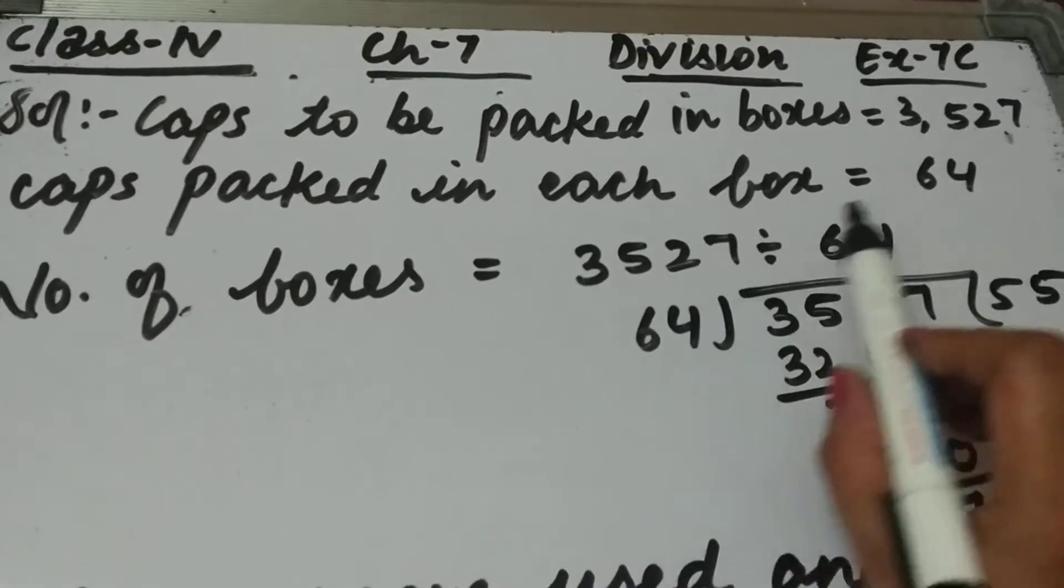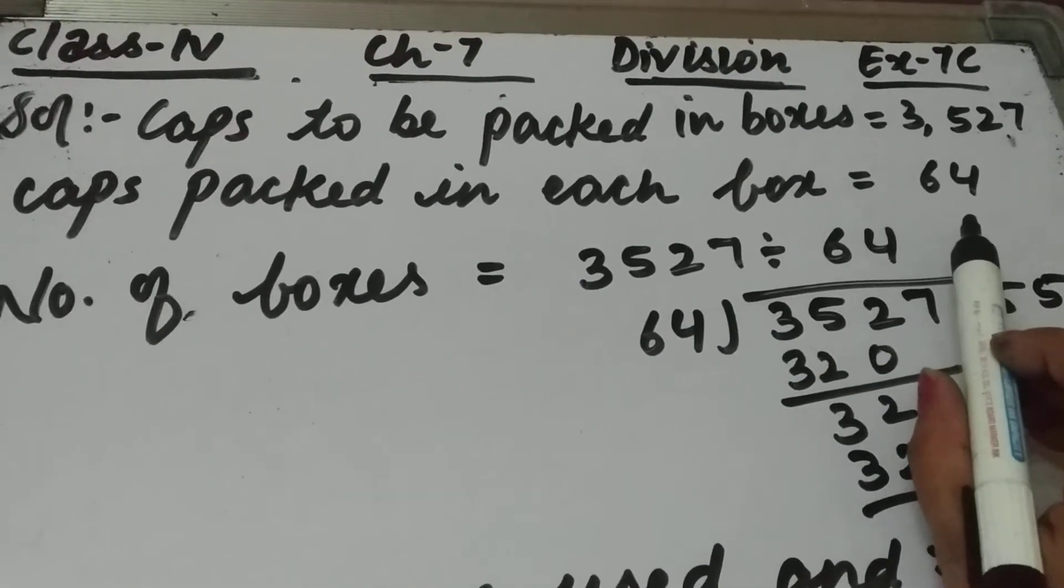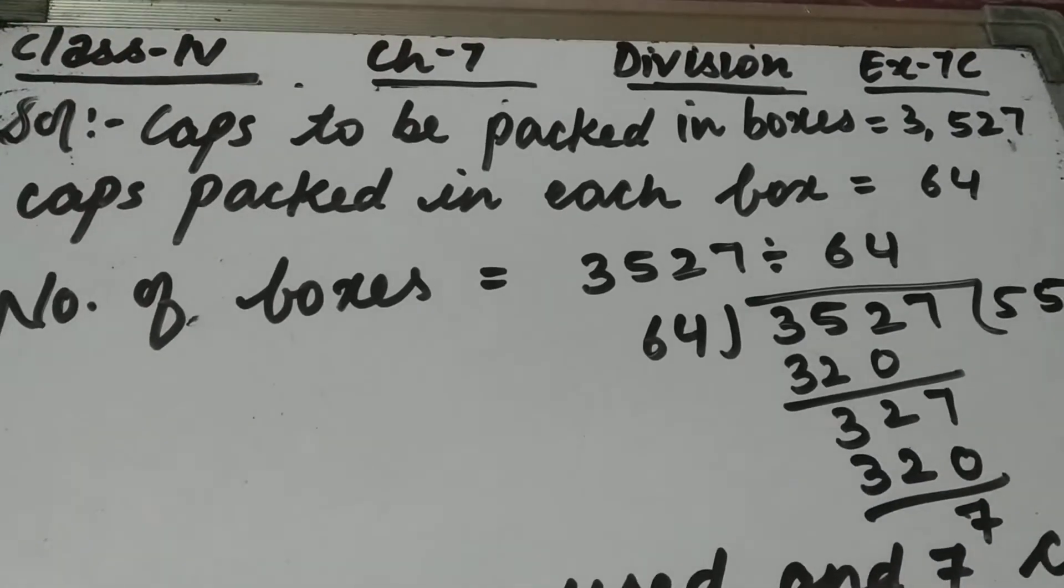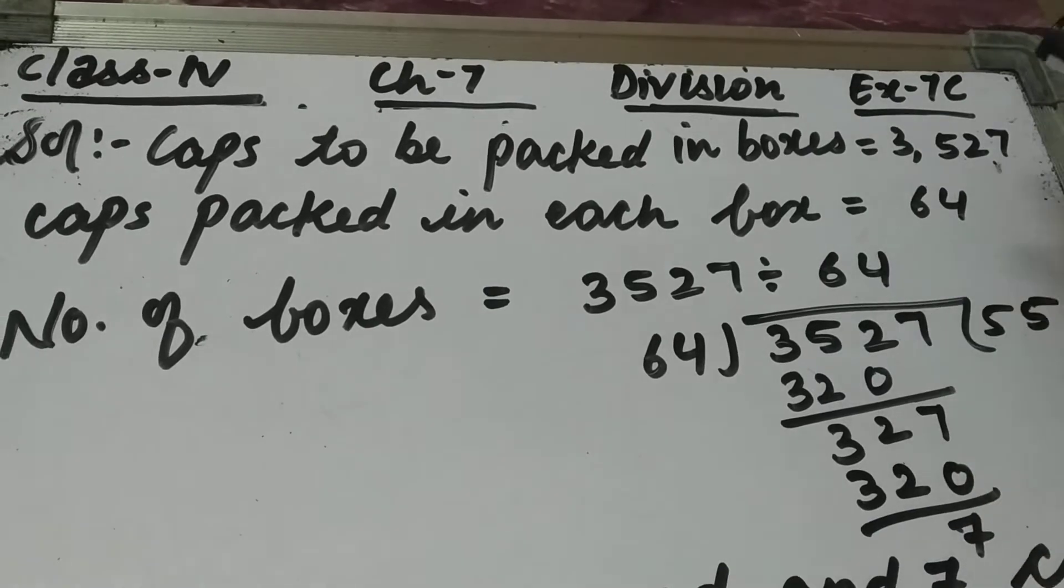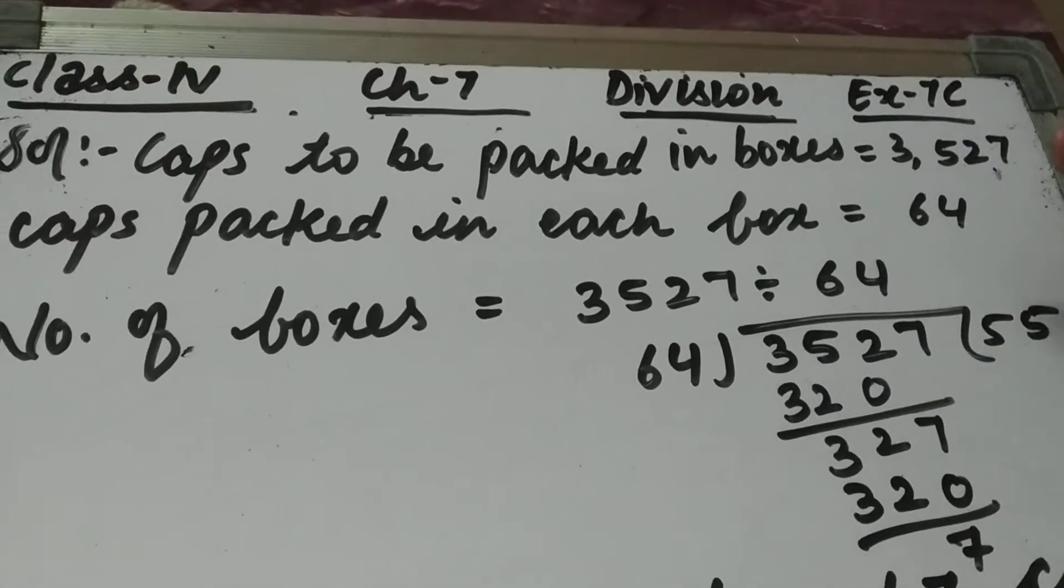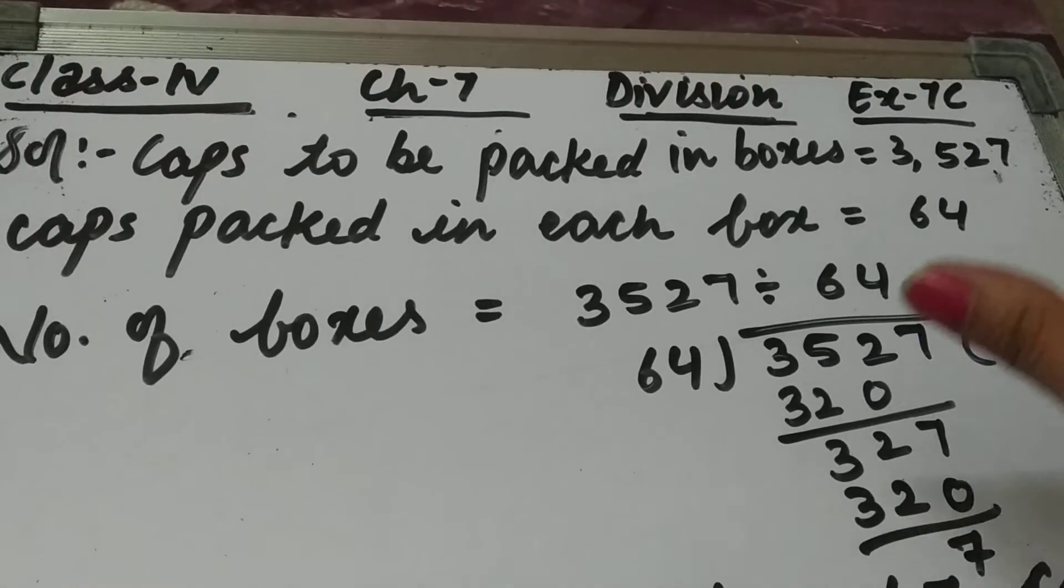And now we have to find the number of boxes. In each box 64 caps can be packed and 3527 total caps were there. So what we will do? We will divide 3527 by 64.